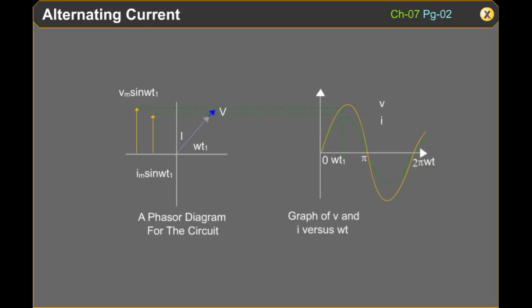The animation represents the phasors V and I for the case of a resistor R in the same direction. This is so for all times. This means that the phase angle between the voltage and the current is zero.